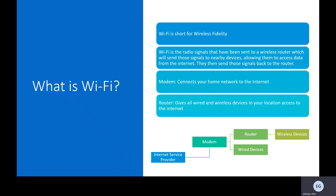Devices can then send those signals back to the router so they can receive and transmit information back and forth to the internet. Most internet providers will give you a device that is both modem and router. Modems connect your home network to the internet, whereas a router gives all wired and wireless devices in your location access to it.